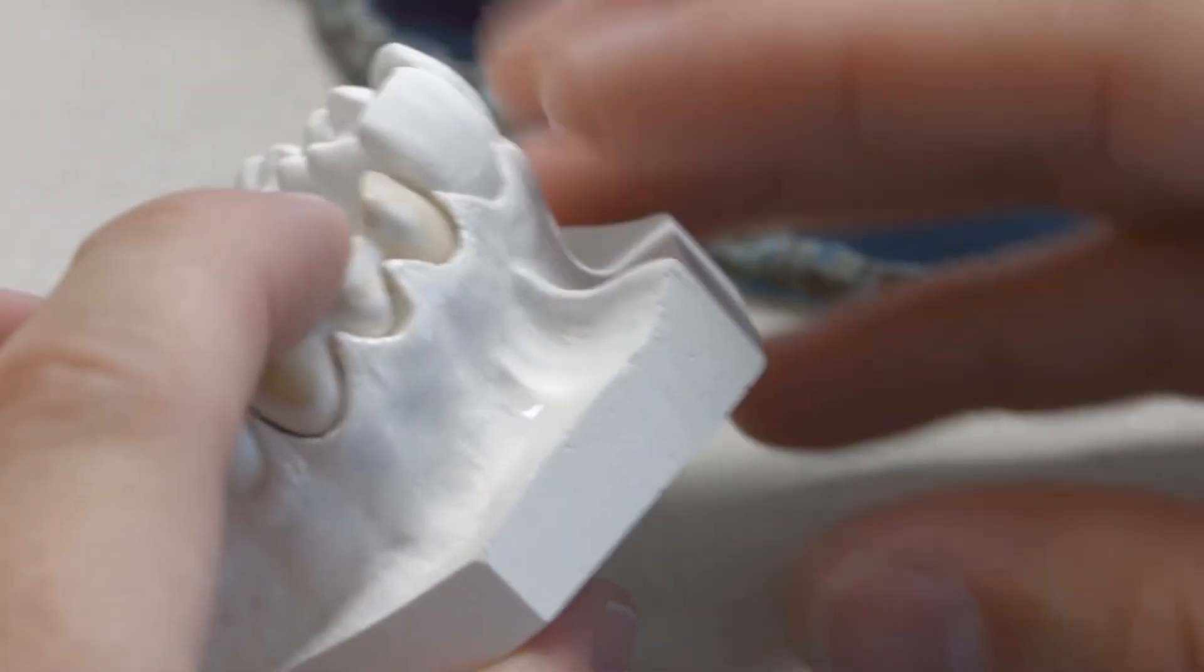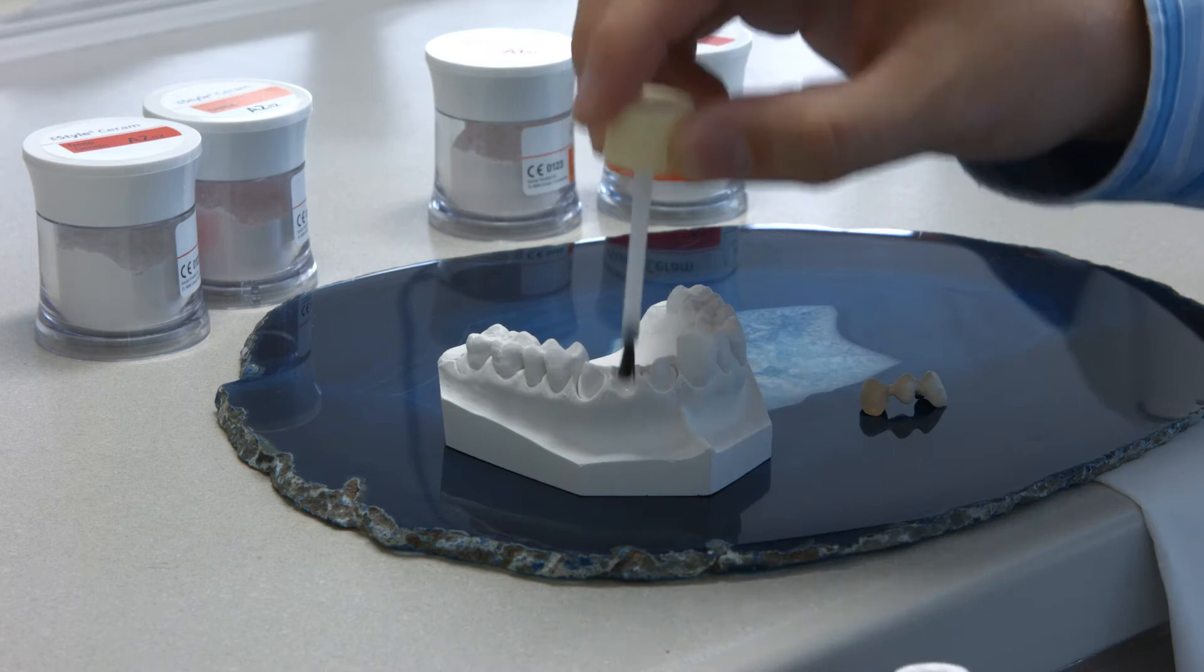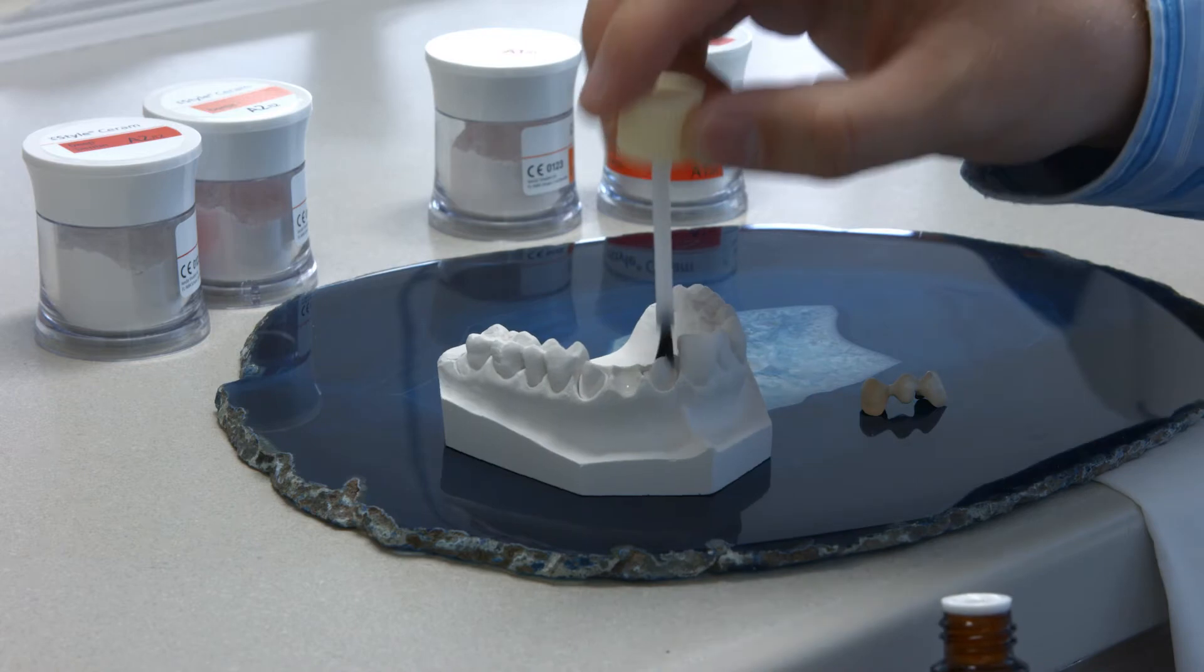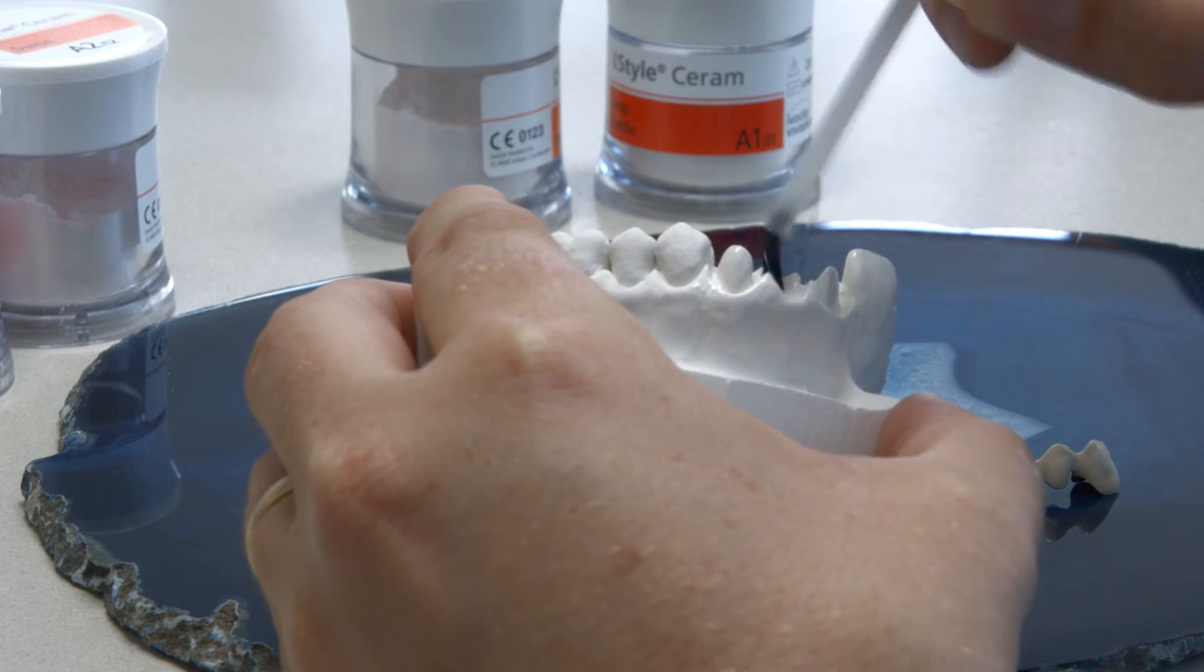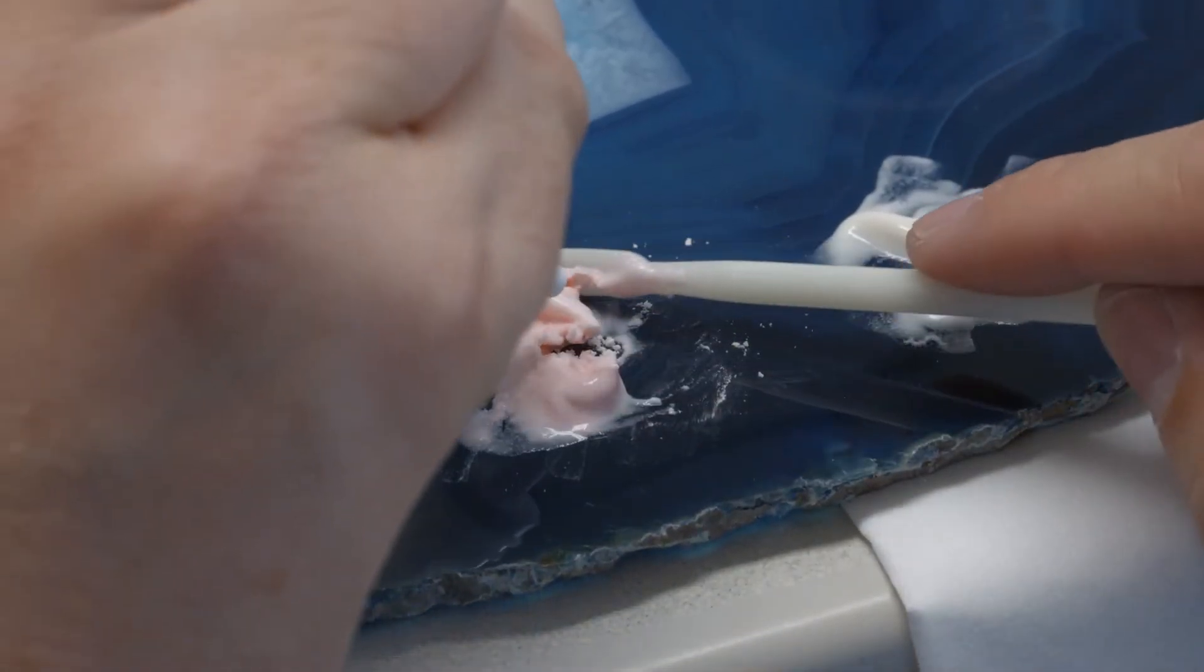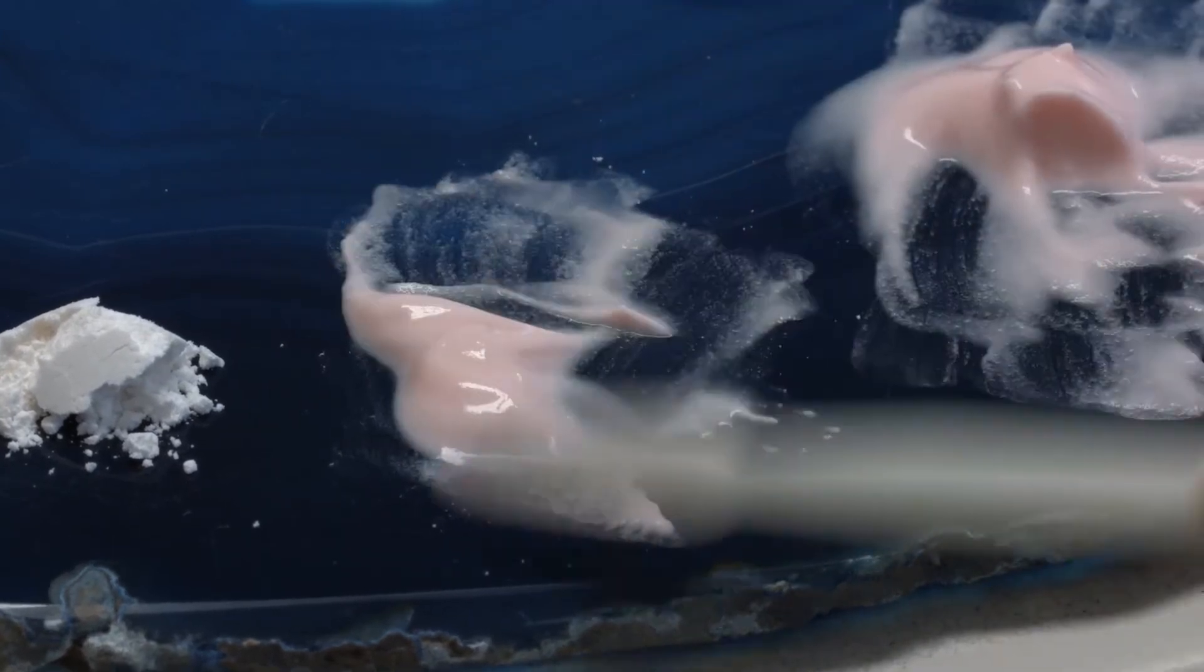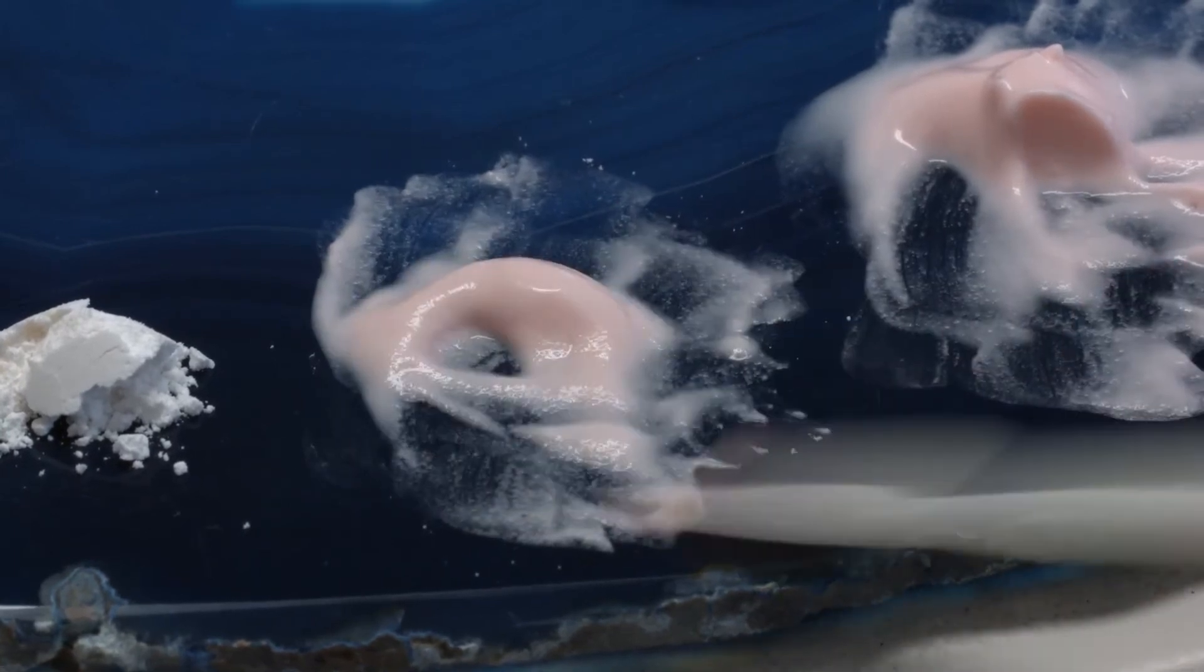Once the restoration fits properly, the dentin and incisal materials can be applied. Use IPS ceramic separating liquid to isolate the model areas which you previously sealed with IPS model sealer. This prevents the ceramic materials from drying out or sticking to the model. Adjust the desired stiffness of the ceramic materials by mixing them with IPS build-up liquid all-round or IPS build-up liquid soft. Only use distilled water to re-wet already mixed or applied layering materials. This prevents the accumulation of organic components.